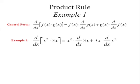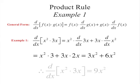For example, differentiating x squared times 3x: you take the first, x squared, times the derivative of the second, plus the second, 3x, times the derivative of the first, x squared. That gives x squared times 3, plus 3x times 2x, because the derivative of 3x is 3 and the derivative of x squared is 2x. Multiplying and adding gives 9x squared.